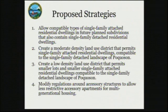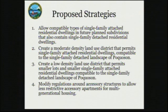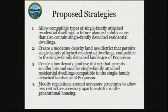Strategy one is to allow compatible types of single-family attached residential dwellings in future planned subdivisions that also contain single-family detached residential dwellings. This is currently in our comprehensive plan — it's a strategy saying that whenever new subdivisions are built, we should allow a certain percentage of properties to be developed as duplexes or single-family attached dwellings, which would create a cheaper, slightly higher-density housing product that would be slightly more affordable to residents.